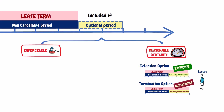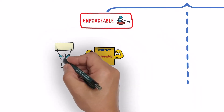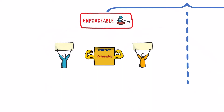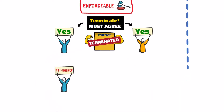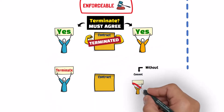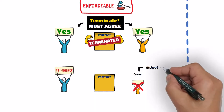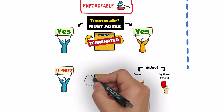Let us talk about the first condition. The lease is enforceable when both the lessee and the lessor must agree to terminate the lease. No party can terminate the lease without the approval of the other party. If one party can terminate the lease without the consent of the other party and without a significant penalty, then the lease is not enforceable.